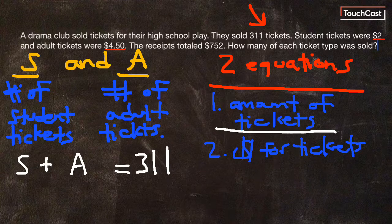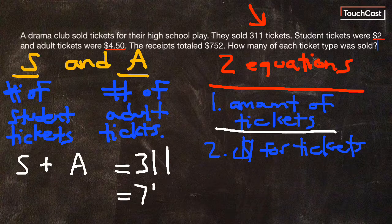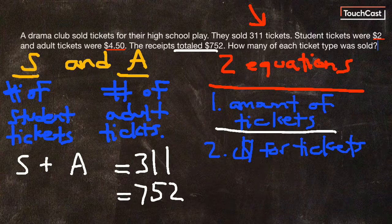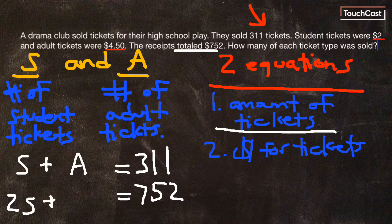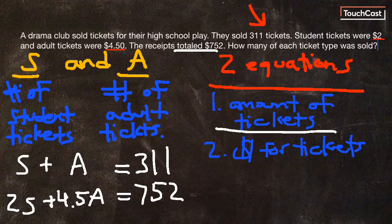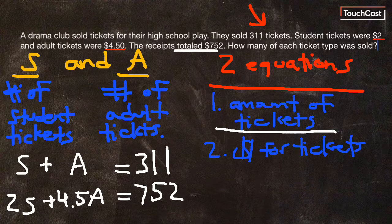The second equation is going to be about money. The total amount of money should equal $752. For every student ticket sold, it's $2, so $2 times S, plus $4.50 for every adult ticket, should equal $752. If I combine all the money made for student tickets and add that to the money made for adult tickets, that should total $752. Now we have two equations.